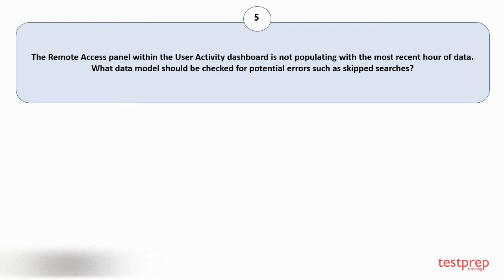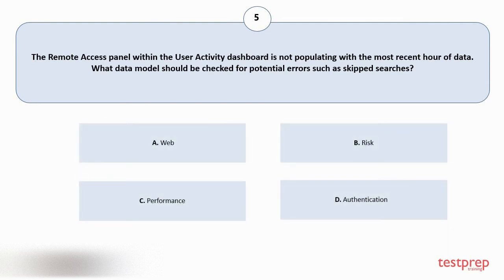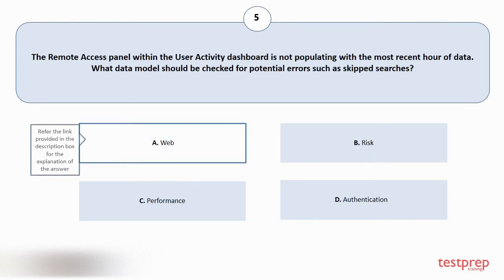Question number five: the Remote Access panel within the User Activity dashboard is not populating with the most recent hour of data. What data model should be checked for potential errors such as skipped searches? Options are: A) Web, B) Risk, C) Performance, D) Authentication. The correct answer is option A.